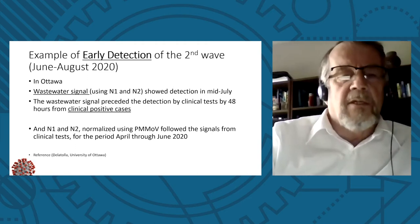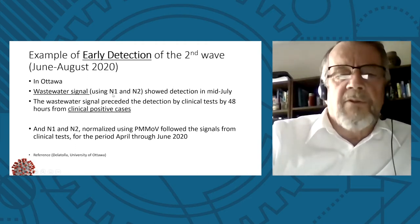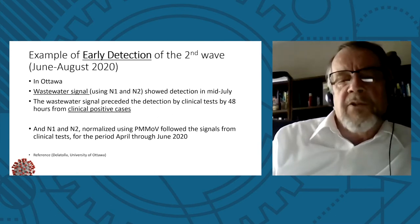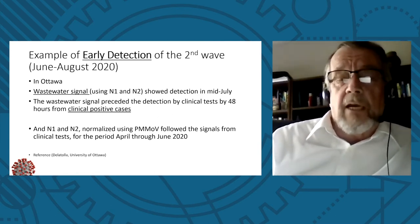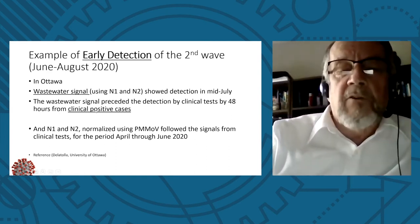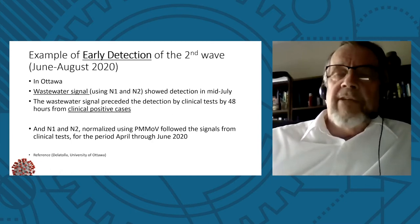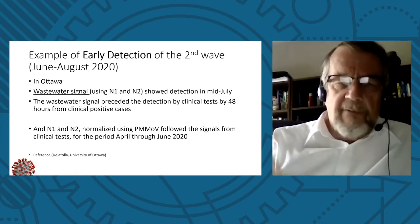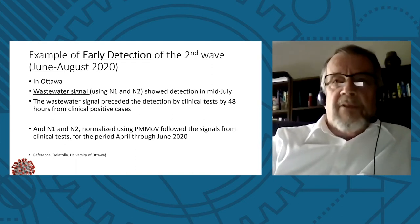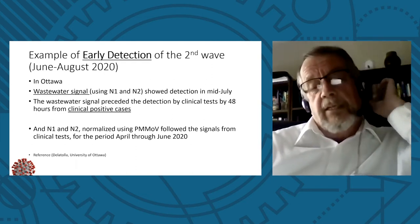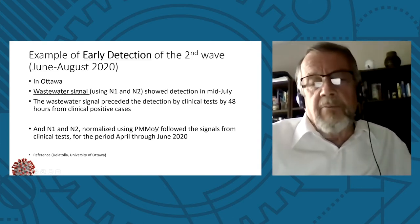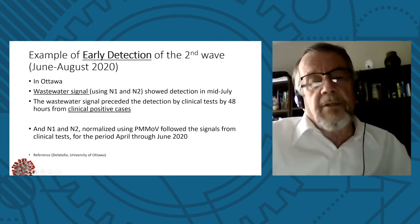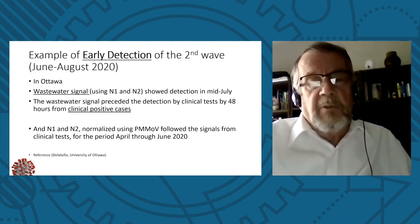As an example from Ottawa: the wastewater signal using N1 and N2 showed detection in mid-July. The wastewater was showing a big wave starting to happen in Ottawa — they were 48 hours ahead of the clinical positive cases. That's indicative of the advanced warning we get, because we capture the virus conveyed through wastewater with feces within a matter of hours and do the analysis. N1 and N2 normalized by PMMOV followed the signal — a very classic, nice example.